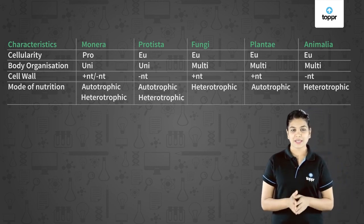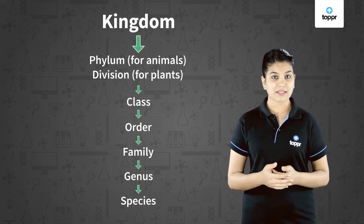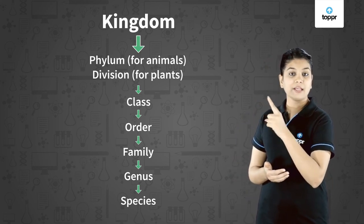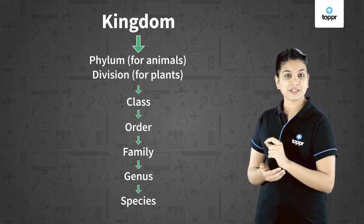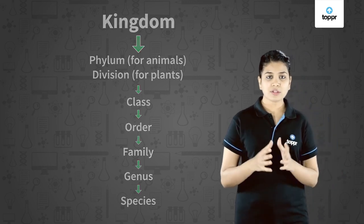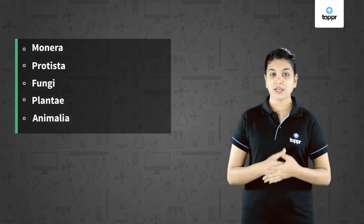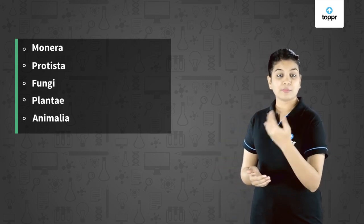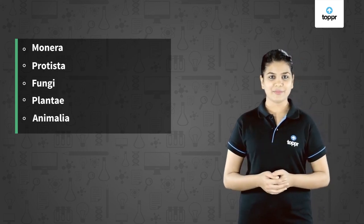So students, in this lesson you have learnt the hierarchy of classification, which is from kingdom, phylum or division, class, then order, then family, genus and species. We have also seen that Whittaker has proposed the five kingdom classification in which we have studied all the five kingdoms as Monera, Protista, Fungi, Plantae and Animalia.